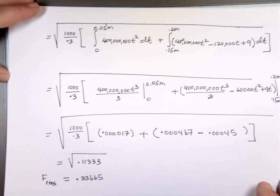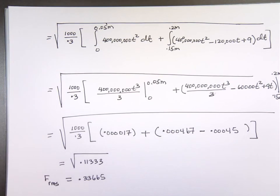Did anyone get that answer? One student did but had used negative 20 instead of negative 20,000, so was off by a power — that was the milli issue. I almost missed it at the beginning too.